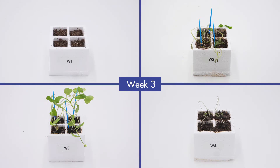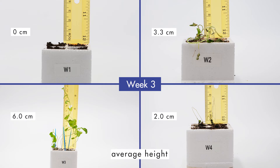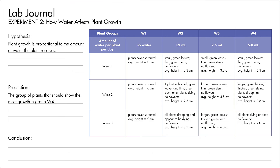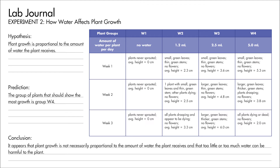Observe the four groups of plants at the end of week three. Record your observations and the average height for each group in your journal. Did this experiment confirm the hypothesis? The plants in group W4 received the most water, but they are not the healthiest plants — they received too much water. It appears that plant growth is not necessarily proportional to the amount of water received, and that too little or too much water can be harmful. Record your conclusion in your lab journal.